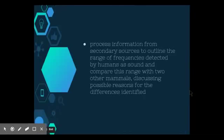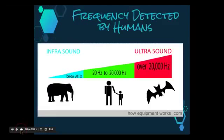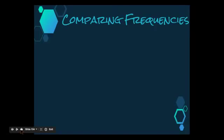Along with this theory dot point, there's a secondary source dot point that says, process information from secondary sources to outline the range of frequencies detected by humans as sound and compare this range with two other mammals discussing possible reasons for the differences identified. So before we had to compare the structures that the organisms had to detect ranges, and now we're going to actually compare the physical ranges. So you need to be able to remember the actual numbers of the ranges that are detected by different organisms. The frequency range of human hearing is limited to approximately 20 to 20,000 cycles per second, or hertz in children. The ability to hear high-pitched sounds decays with age.